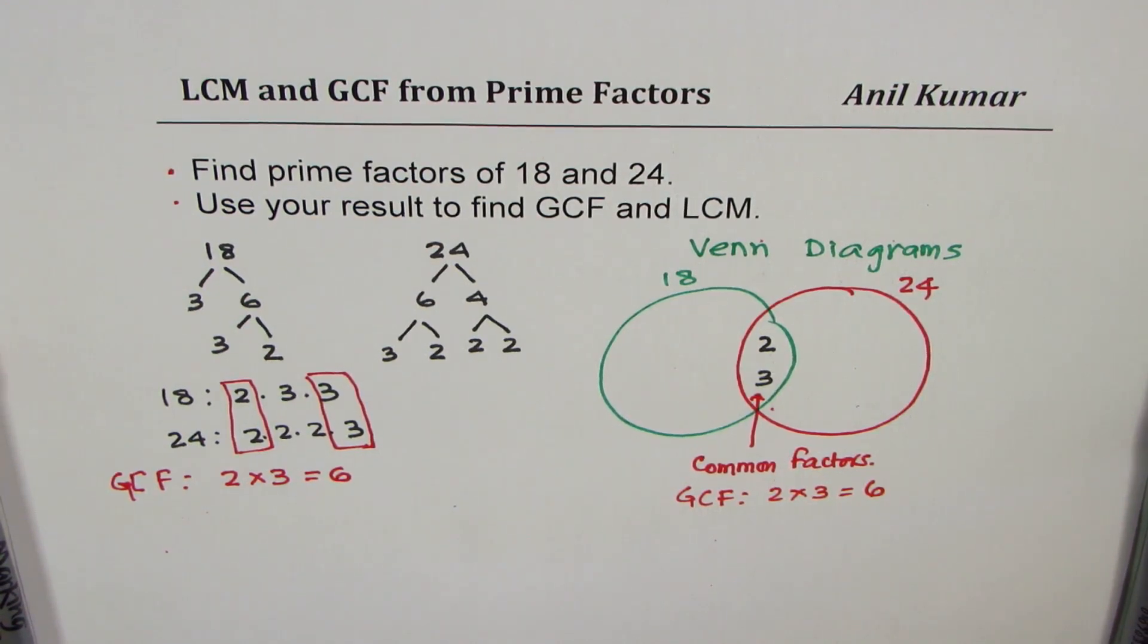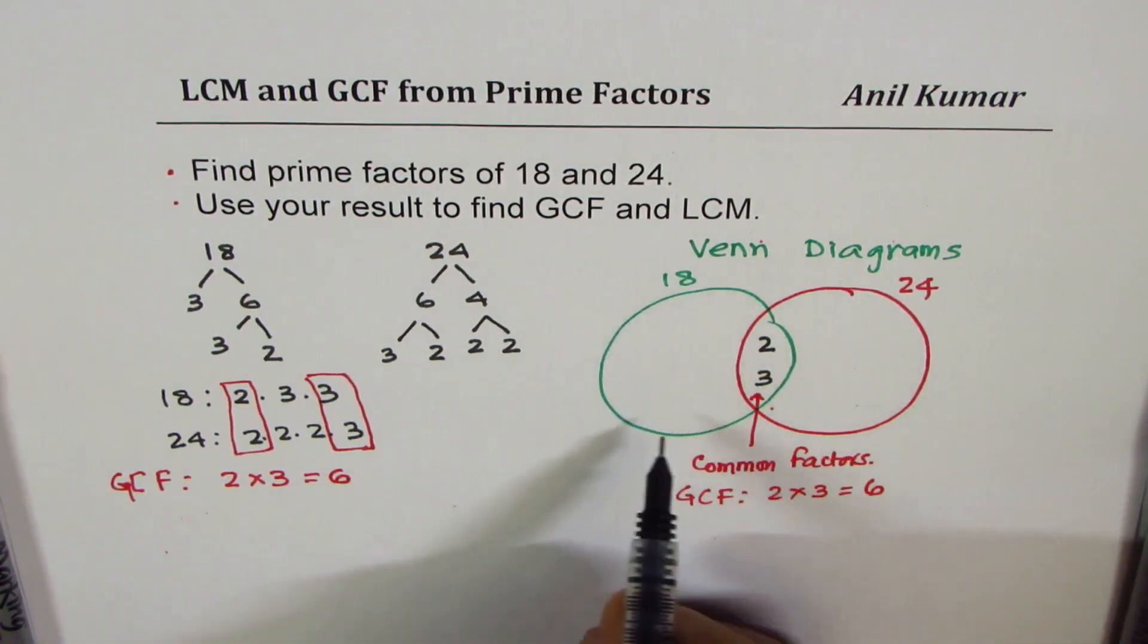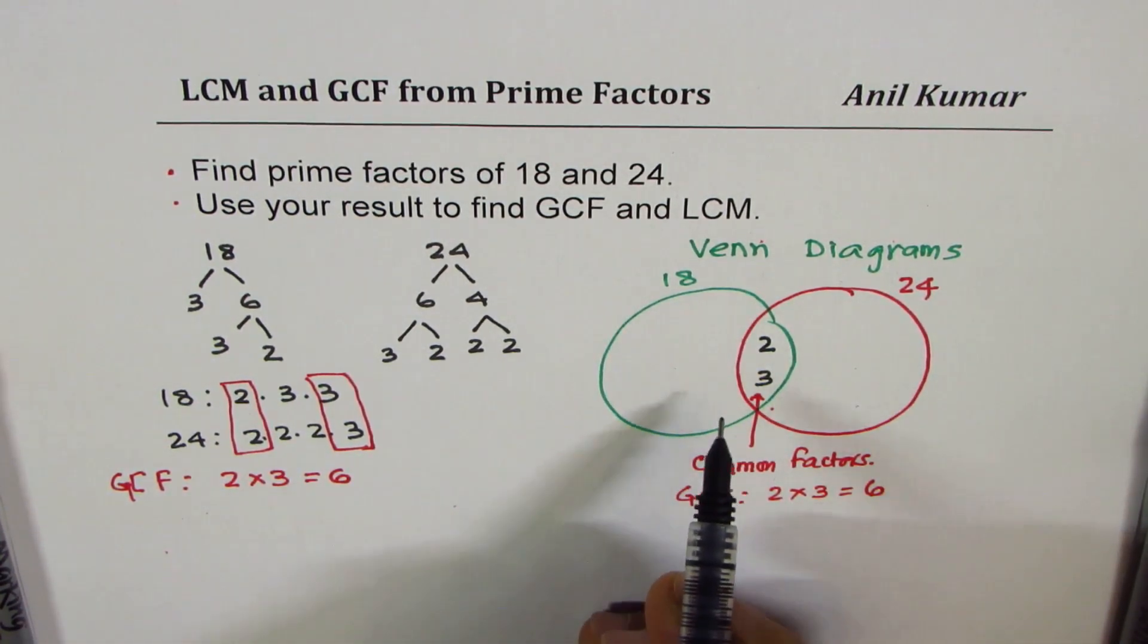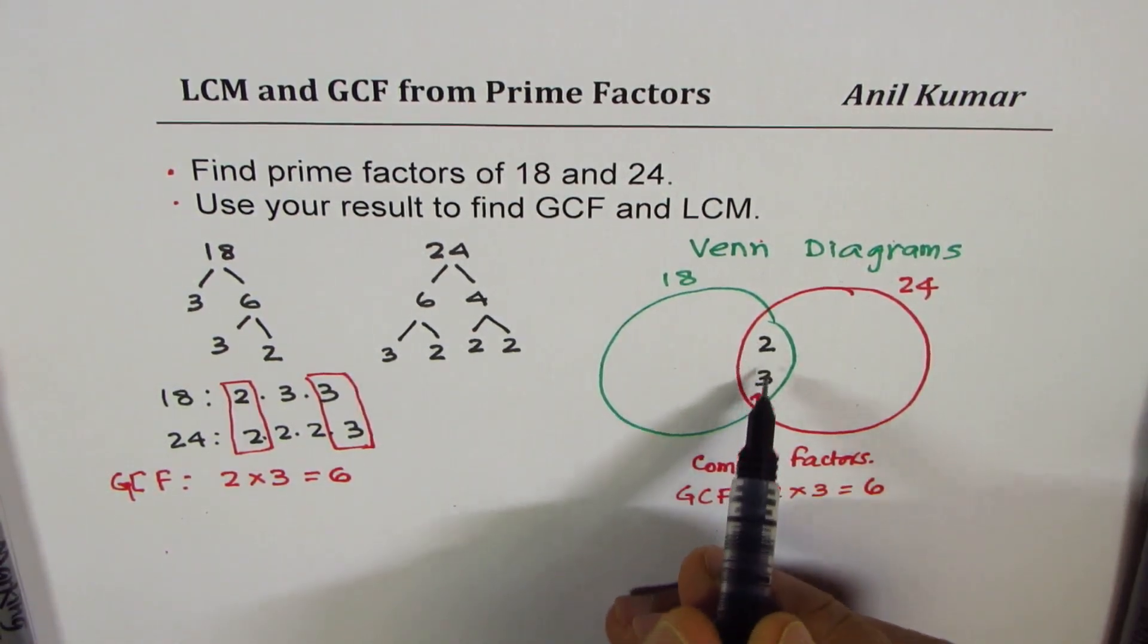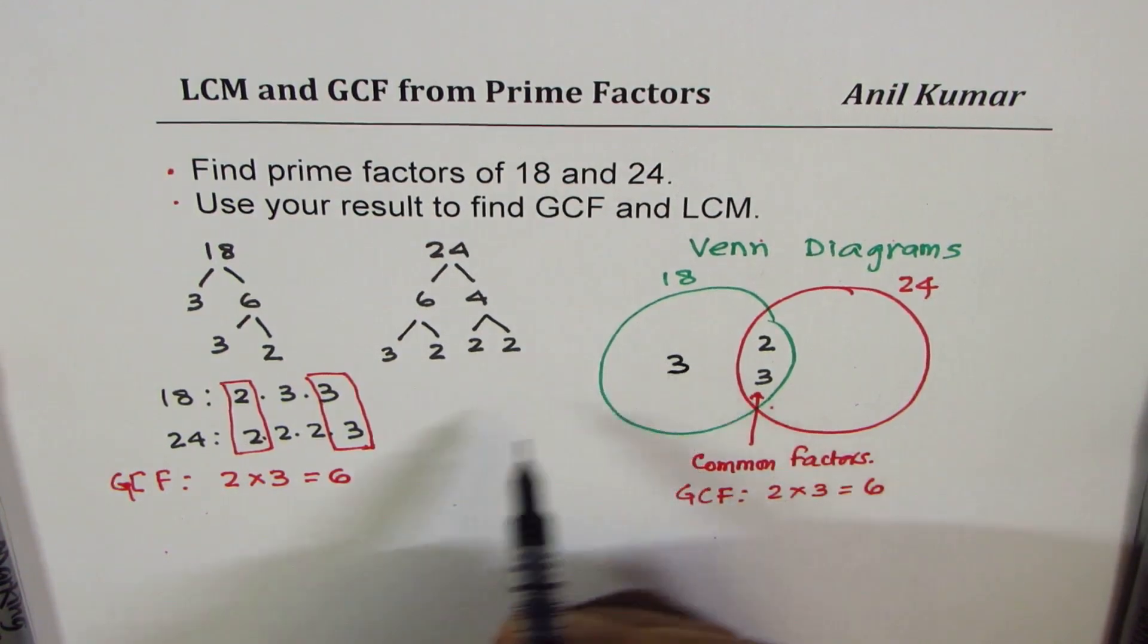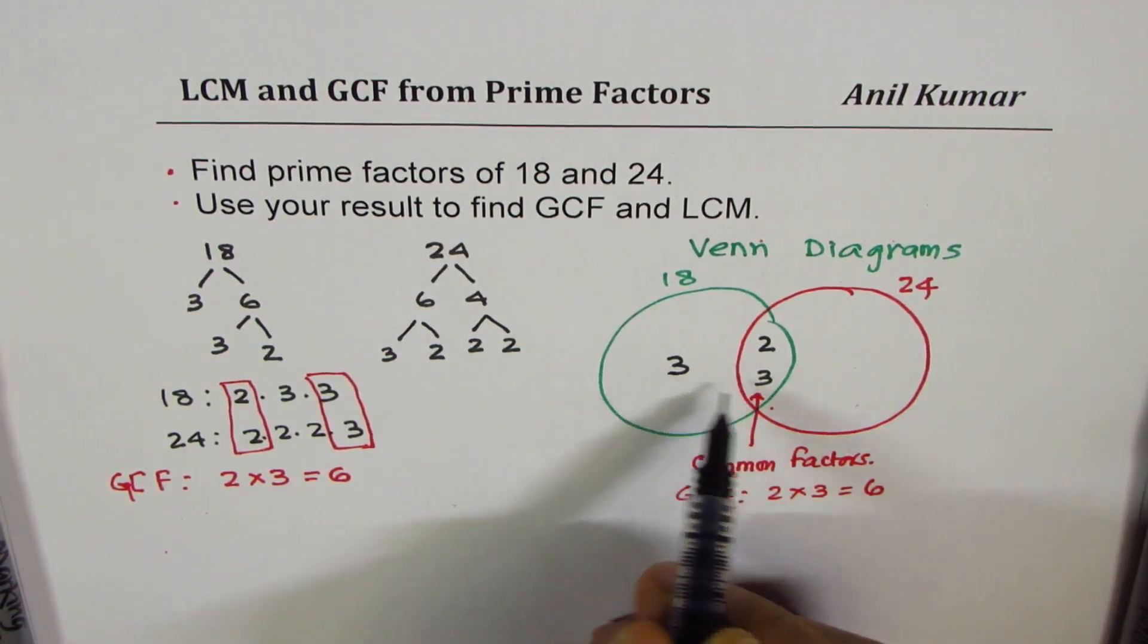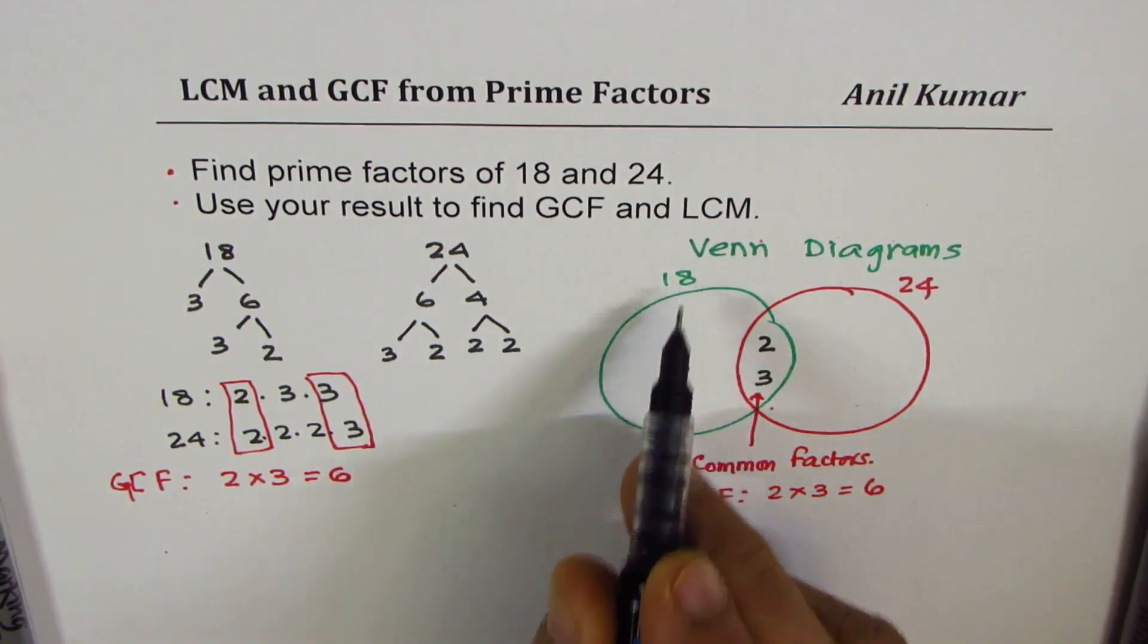Now to get the least common multiple, we'll actually fill in the other factors. For 18, the factors are 3, 3, and 2. One 3 and 2 has been taken care of. We are left with one 3. So 3, 3, and 2. 3 times 3, 9. 9 times 2, 18. Perfect.